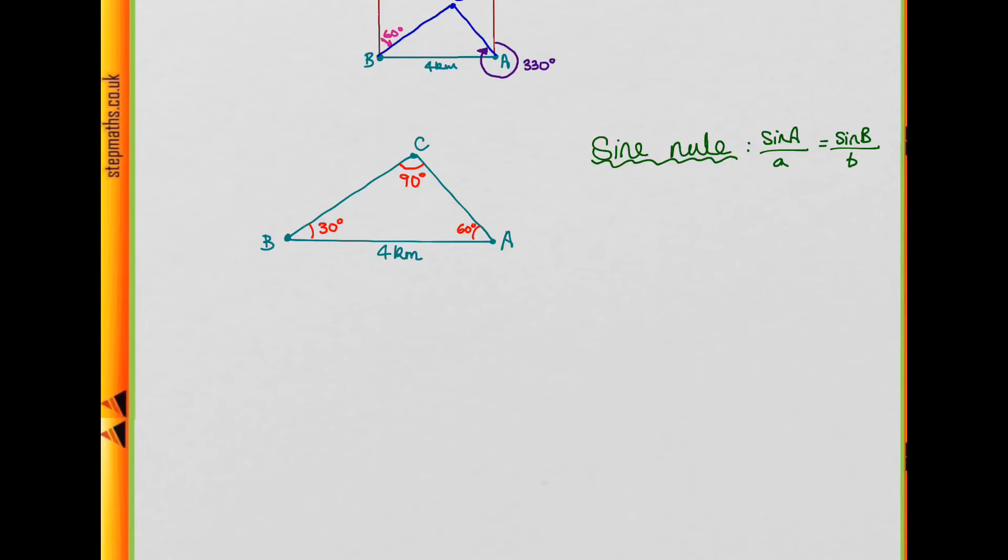So we're going to consider this angle at A and the side BC, because that's what we want to try and find. And this angle at C and this side here, because we already know this, so we can use it to work out BC. So can you substitute these things into the sine rule? Have a go at doing this now.